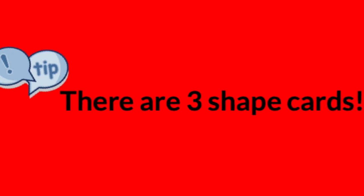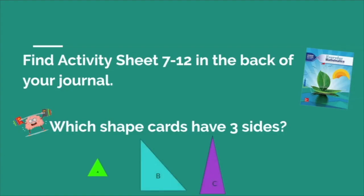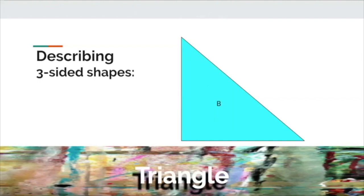Great job! If you found shape cards A, B, and C, you have found the three-sided shapes out of all the shapes that you've cut out. What do we call a three-sided shape? If you know the name of the shape, say it out loud right now. If you guessed triangle, you got that correct.